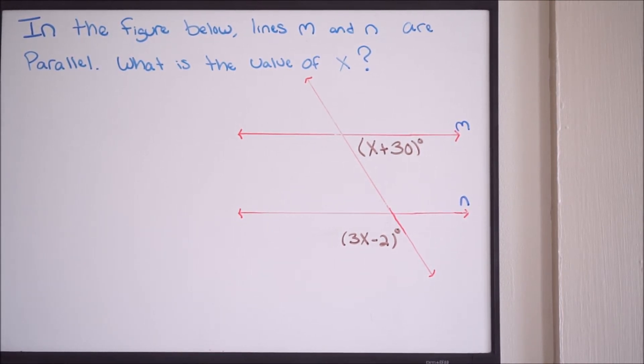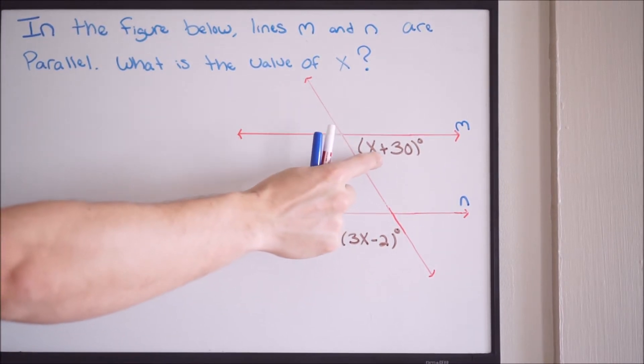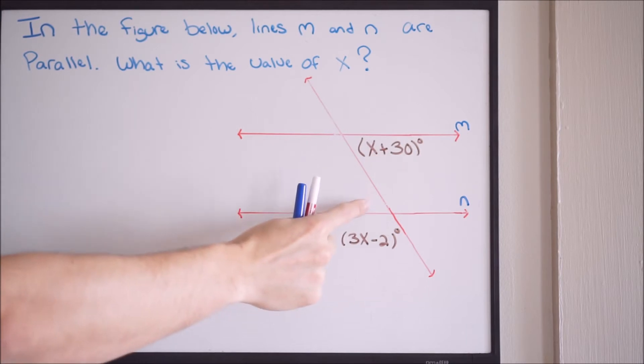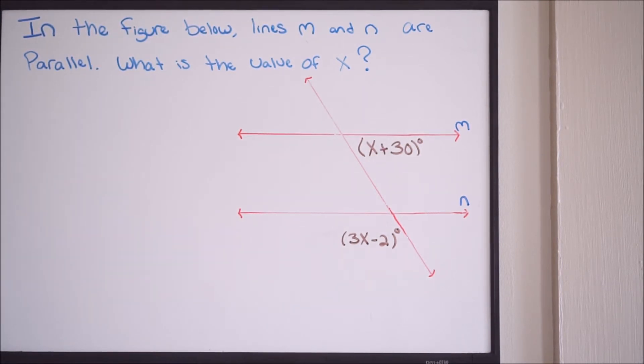to our definition of alternate interior angles, and we know that alternate interior angles are formed when a transversal passes through two lines, which we have here. So we know that this angle here and this angle here, those are going to be alternate interior angles. And to take it a step further, since these lines are parallel, m and n, we know that these alternate interior angles are going to be equal. So keep that in mind as we go ahead and solve this problem.